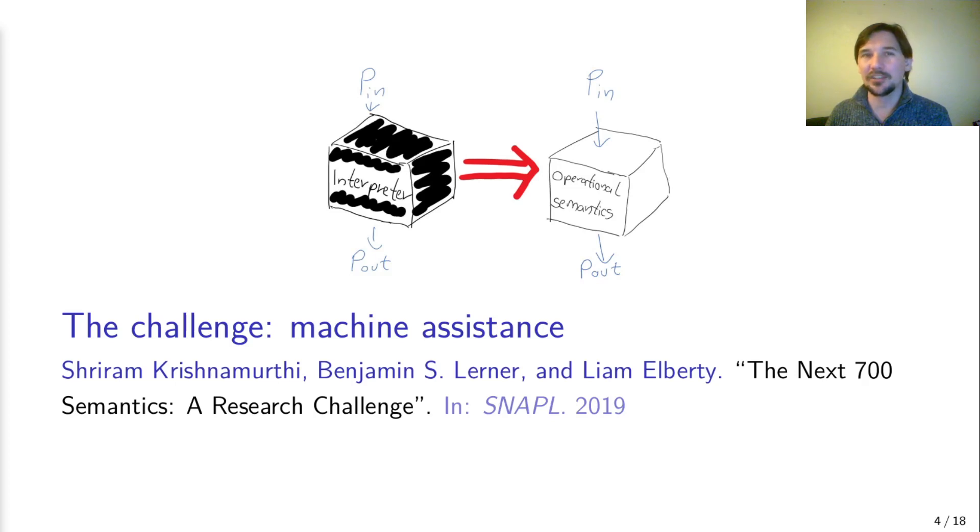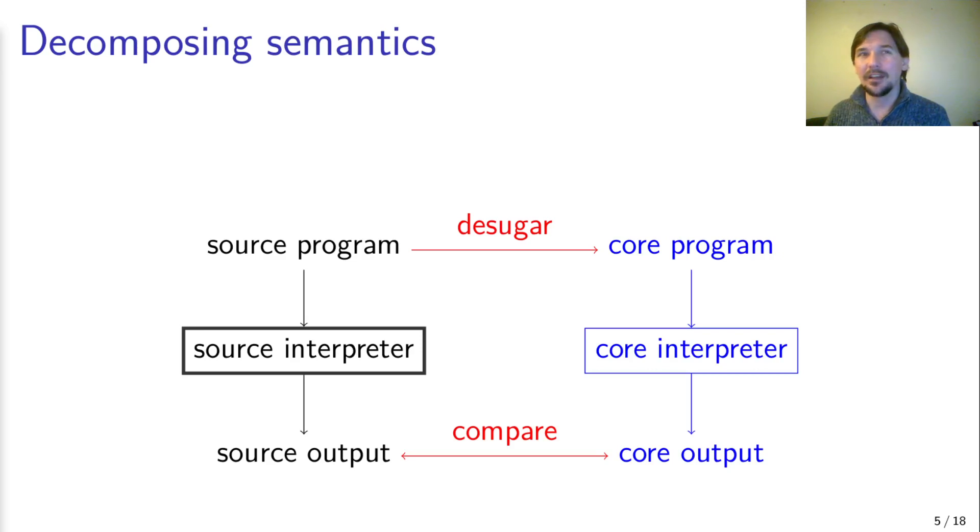The next logical step is to achieve semi-automation or machine assistance for this task. This is the challenge Krishnamurti and his colleagues have put forward for the research community in their paper referenced on the slide. The aforementioned papers on JavaScript and Python exemplify a common trend in testing semantics, decomposing the semantics into two parts, a core language and shallow translations that desugar the full source language into this reduced core version.